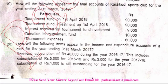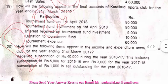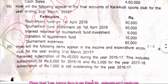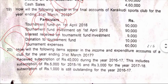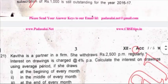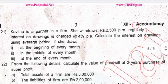For the year ending 31st March 2017: received subscriptions 40,000 during the year 2016-17. This includes subscriptions of 5,000 for 2015-16 and 3,000 for the year 2017-18. Subscription of 1,000 is still outstanding for the year 2016-17. Questions 19, 21.